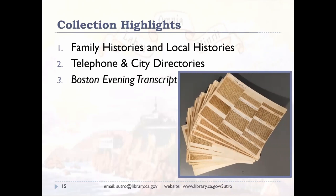The Boston Evening Transcript genealogy column was published at least twice a week from the late 1890s to 1941. It's where researchers queried, answered, and theorized — similar to an online discussion board. It's a valuable resource for New England genealogy and families from the 1600s to 1800s, and it also covers families west of the Appalachians such as Kentucky and Missouri. Many researchers have requested scans of originals for lineage society membership applications. Our library does not charge for this service — we don't charge for any of our services.